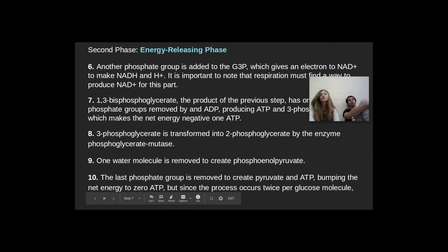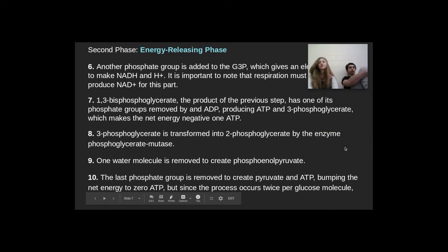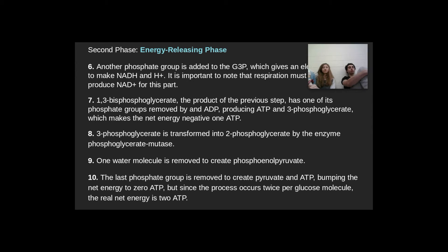The 1,3-bisphosphoglycerate gives an electron to NAD+ to make NADH and H+. This produces ATP and 3-phosphoglycerate, giving a net energy of negative 1 ATP. 3-phosphoglycerate is transformed into 2-phosphoglycerate by the enzyme phosphoglycerate mutase. One water molecule is removed to create phosphoenolpyruvate. The last phosphate group is removed to create pyruvate and ATP, bringing net energy to 0 ATP. But since the process occurs twice, the actual net energy is 2 ATP.